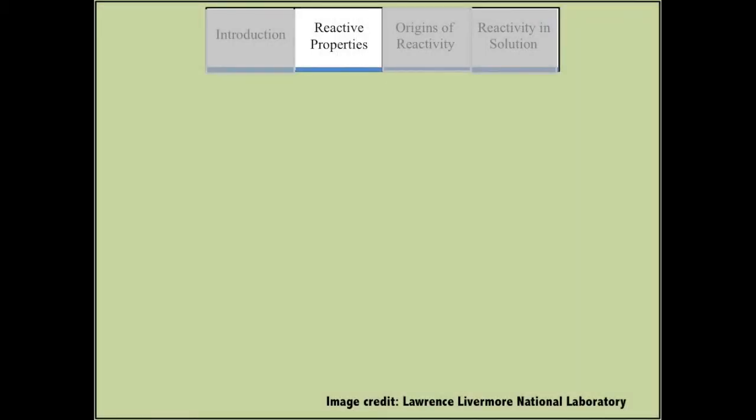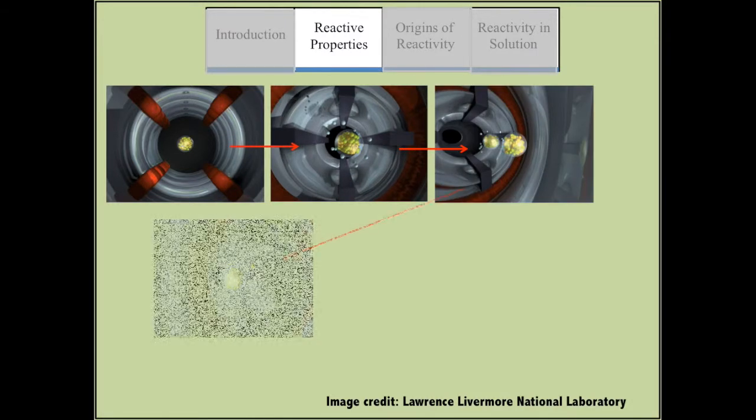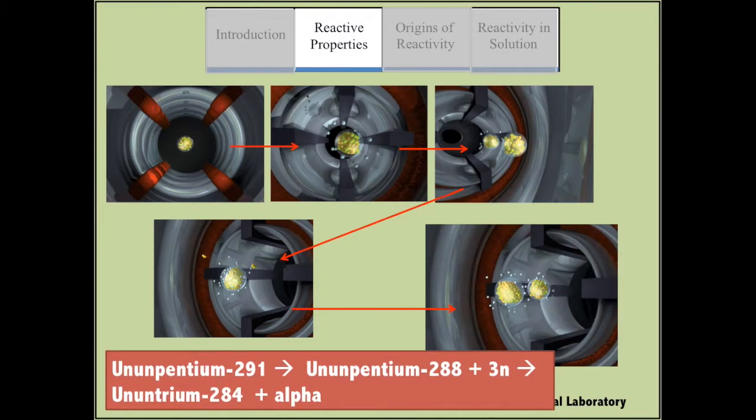This produces four atoms of ununpentium-291. However, its instability only makes it last for about 100 milliseconds before undergoing neutron emission and alpha decay to produce ununutrium-248.